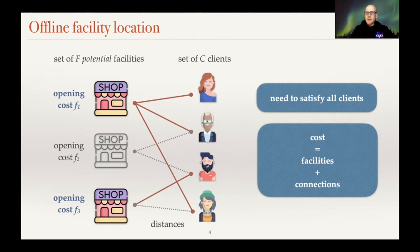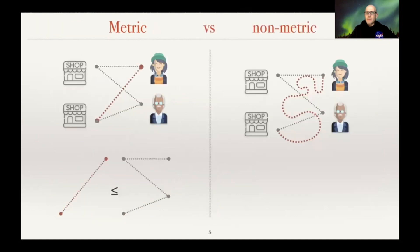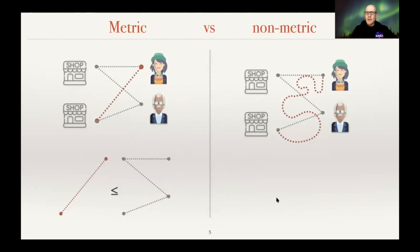That's the offline facility location, and it comes in two flavors. One is the metric flavor, where distances satisfy the triangle inequality, and the non-metric case, where distances can be arbitrary. In particular, there may be no distance between a given client and a facility.